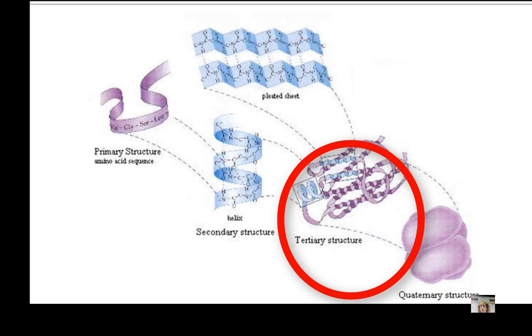Tertiary structure is the overall 3D shape of the polypeptide after it finishes bending and twisting in the secondary structure. Most of the tertiary structures are either globule or fibrous. The indentations and bulges give the polypeptide the specific shape appropriate to its function.